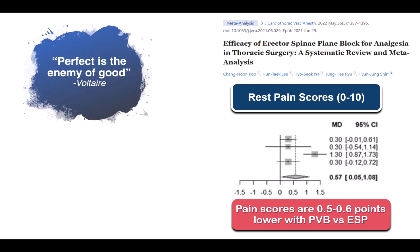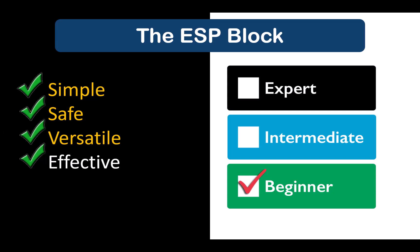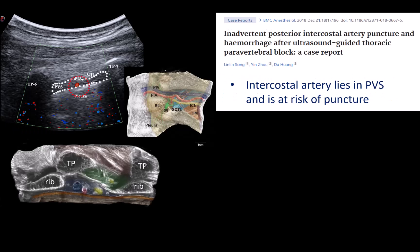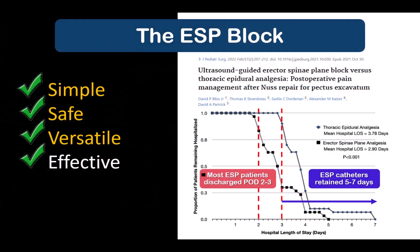That is what the clinical evidence suggests. There are advantages to being further away from the actual target of interest that are worth the trade-off of any decrease in conduction block intensity, and these chiefly have to do with simplicity, safety, and versatility — which have always been the attractions of the ESP block. The paravertebral block has always been perceived as a challenging technique carrying risks of significant complications. While pleural puncture is on everyone's mind, vascular puncture is an underappreciated complication — the intercostal artery runs in the paravertebral space and is at risk of puncture with potentially dramatic consequences. The ESP block is safer, simpler, and has far fewer relative contraindications.